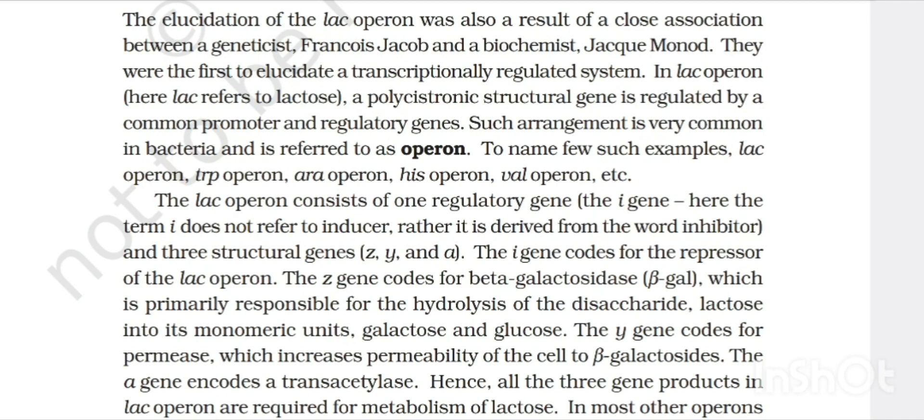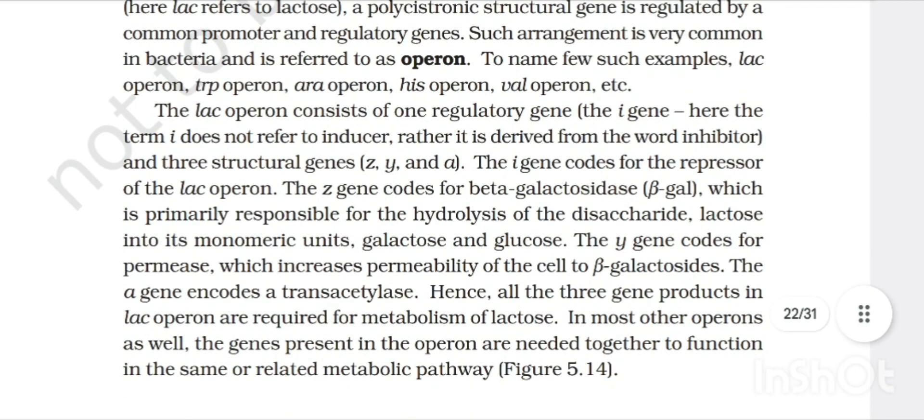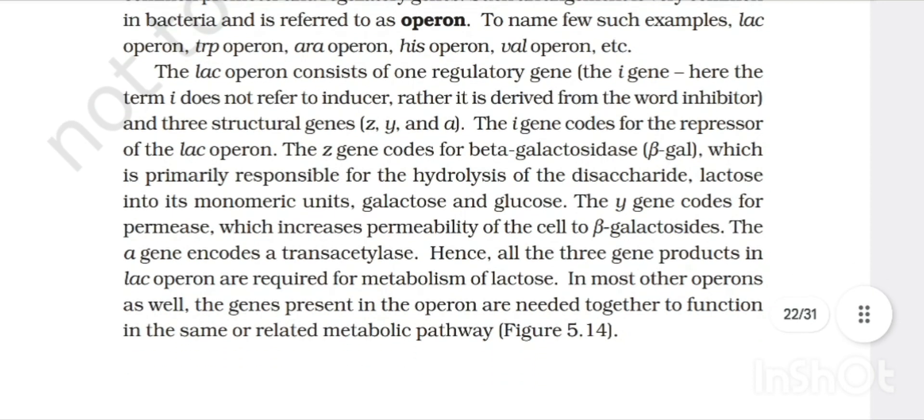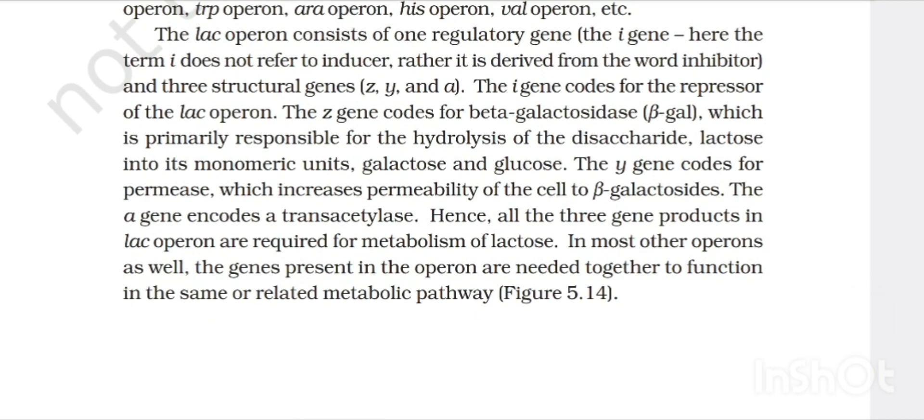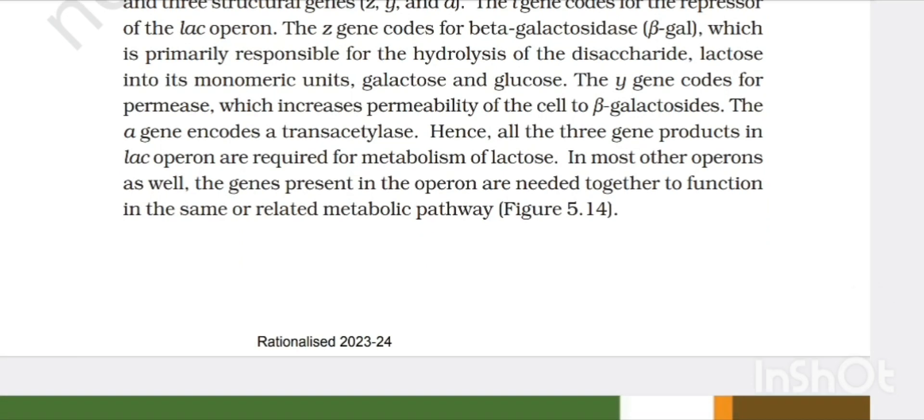Here lac means lactose. A polycistronic structural gene regulated by common promoter and regulatory genes - such arrangement is very common in bacteria and referred to as operon. To name few such examples: lac operon, trp operon, ara operon, his operon, val operon etc. Lac operon consists of one regulatory gene that is I gene - here I means inducer, rather it is derived from the word inhibitor - and three structural genes Z, Y and A. I gene codes for repressor of lac operon. Z codes for beta galactosidase which is primarily responsible for hydrolysis of disaccharide lactose into two monomeric units that is galactose and glucose. Y gene codes for permease which increases the permeability of the cell to beta galactosidase. A gene encodes transacetylase.